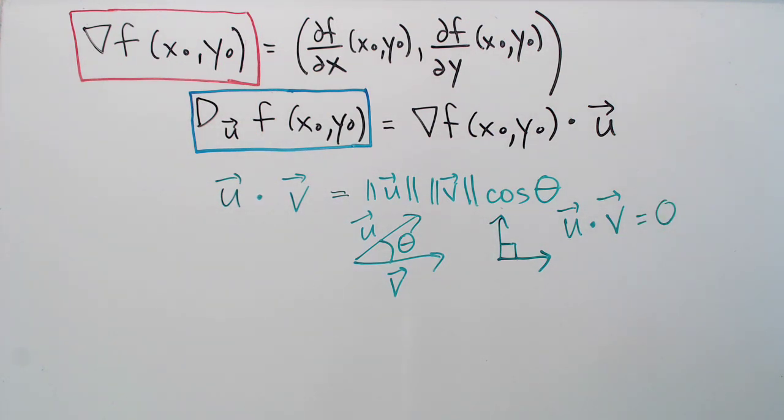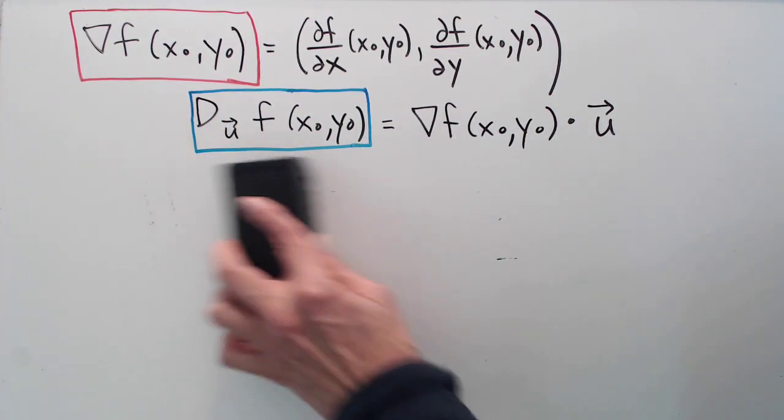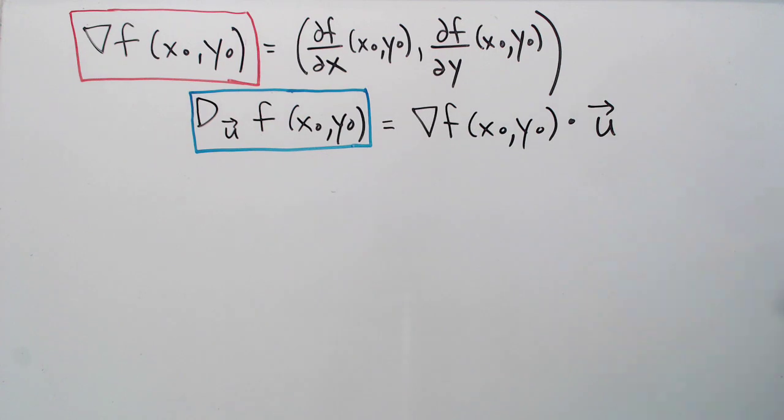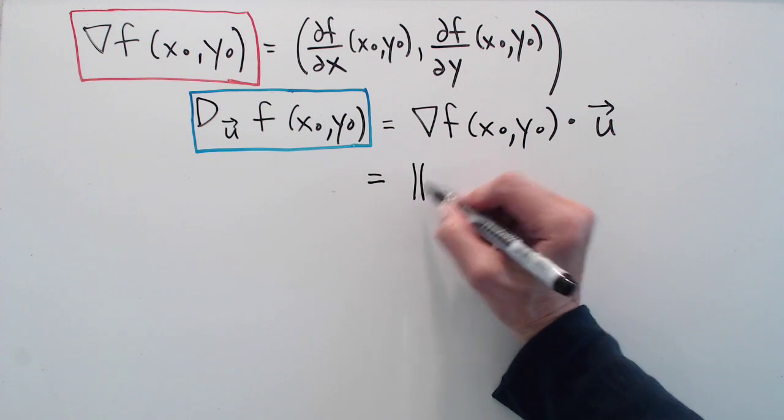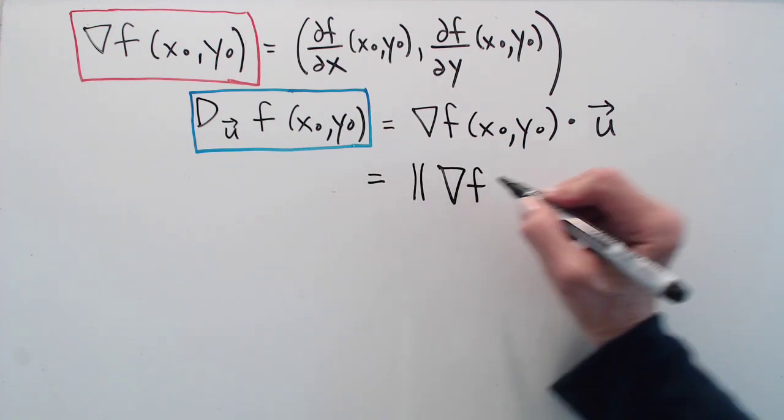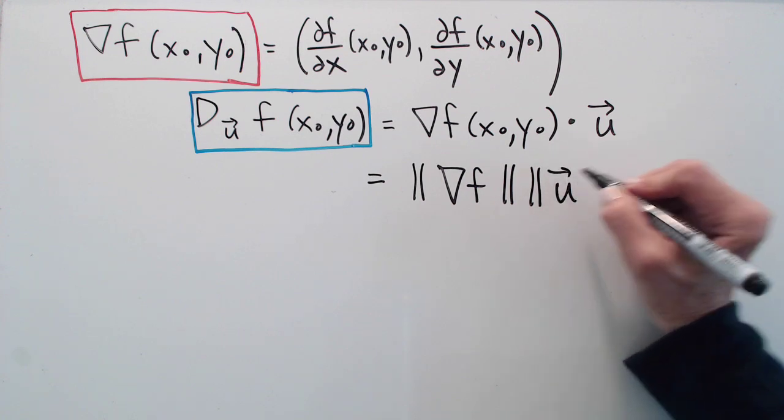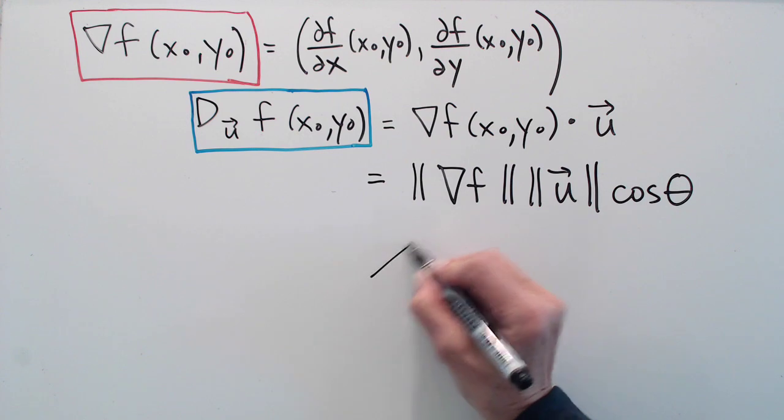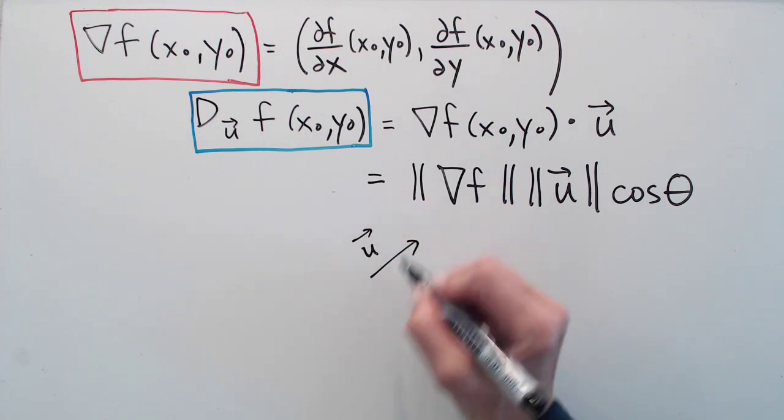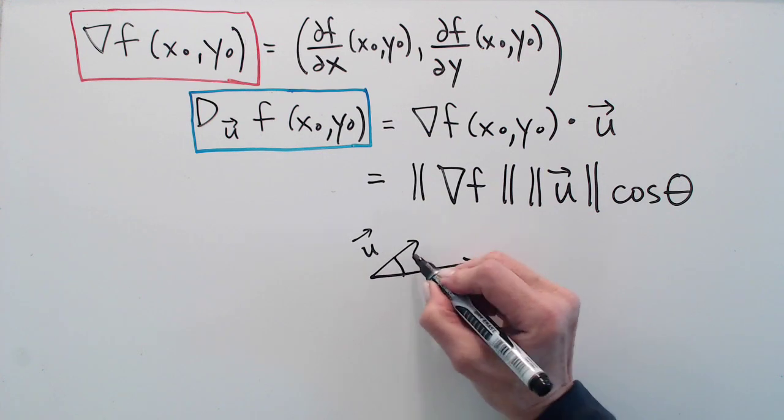That's an extremely useful feature of the dot product. So now let's just return to the directional derivative, which is defined as a dot product and apply that definition and see what it tells us. Well this is the length of the gradient times the length of u times the cosine of the angle between those two vectors. So let's say this is u and this is the gradient and that's theta.